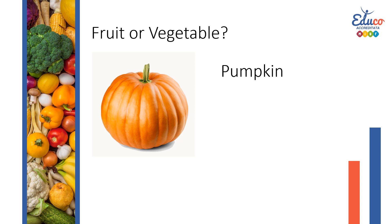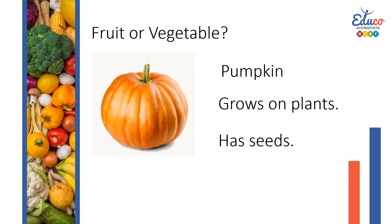A pumpkin grows on plants. A pumpkin has seeds. Is a pumpkin a fruit or a vegetable? A fruit. A pumpkin is a fruit.